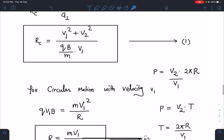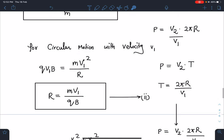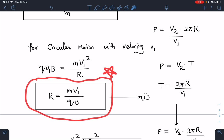So qv₁B I can write as mass times acceleration, which is mv₁²/R. From here we will get this very well-known standard result: R = mv₁/(qB).